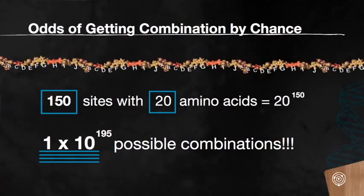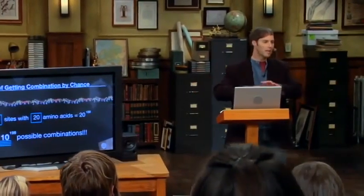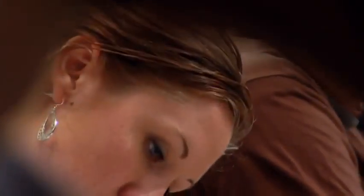We've got 150 sites with 20 possibilities at each site — 20 to the 150th power. Convert that to base 10, that's 10 to the 195th power. We can't even begin to grasp how many combinations that is. Do you know there's only 10 to the 80th elementary particles — protons, neutrons, electrons — in the whole observable universe? You're getting some idea of the scope of these numbers.